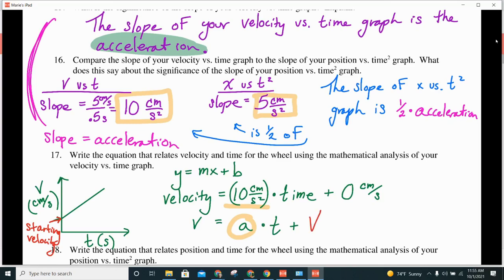And the way we write that is v with a little 0 after it. That means v0, which means the starting velocity. This would be if you were already moving when you started graphing it.